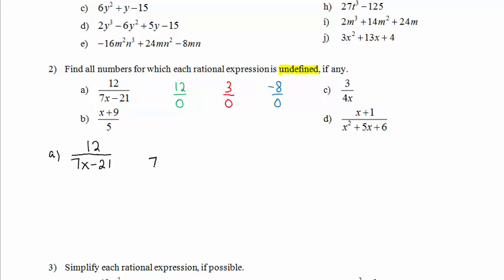The denominator in Part A is 7x minus 21. We set that equal to 0. Solve for x. We get x equals 3.